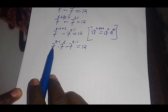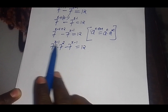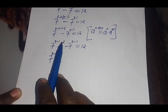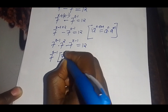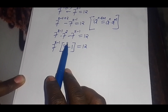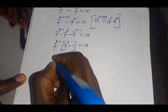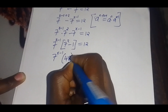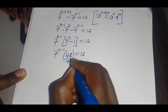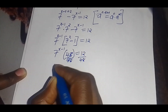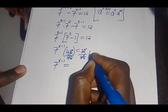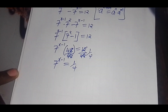Now 7 raised to power (x minus one) is common, so we factor it out. We remain with 7 squared minus one, multiplied by 7 raised to power (x minus one), equals 12. Seven squared is 49, so 49 minus one gives us 48. Therefore 48 times 7 raised to power (x minus one) equals 12. Dividing both sides by 48, we get 7 raised to power (x minus one) equals 12 over 48, which simplifies to one quarter.